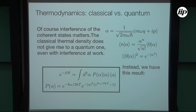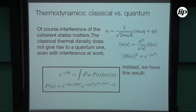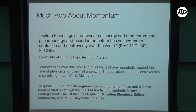With the Schrödinger correspondence, one can ask what distribution of coherent states gives you the e^{-βH} thermal distribution. Unfortunately it's not the classical equilibrated distribution. The distribution of coherent states that does it has more than one answer due to non-orthogonality of coherent states, but the most compact one reduces to a delta function at zero Kelvin. This has started us thinking about momentum. As Blount says, the argument has not been carried out at high volume, but the list of disputants is very distinguished: Rayleigh, Poynting, Ehrenfest, Groeneveld, Minkowski, Pauli—and they don't agree with each other.